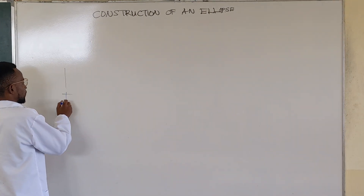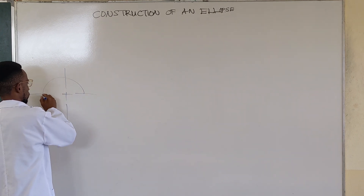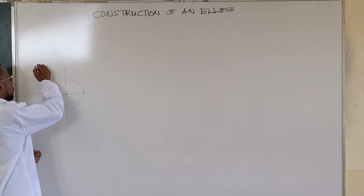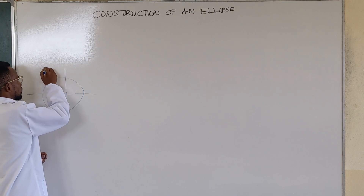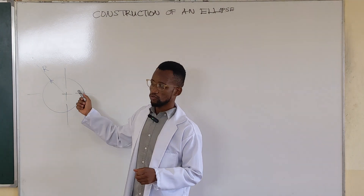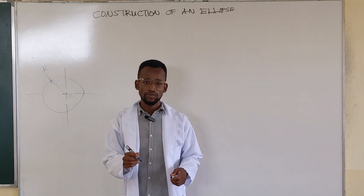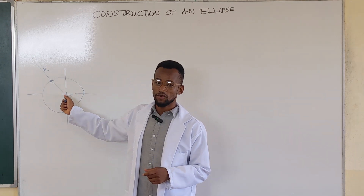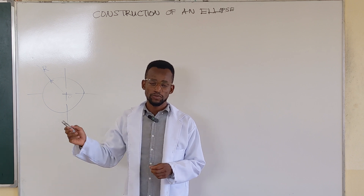If we consider a circle of radius R, we know that that circle is going to have a center O. Any distance from the center O to any point on the circumference of the circle is said to be the radius.